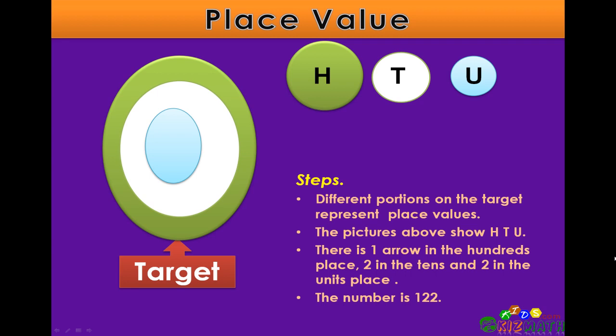Now if I put some arrows into the target, let's see if we can figure out the number. There is one in the green section.